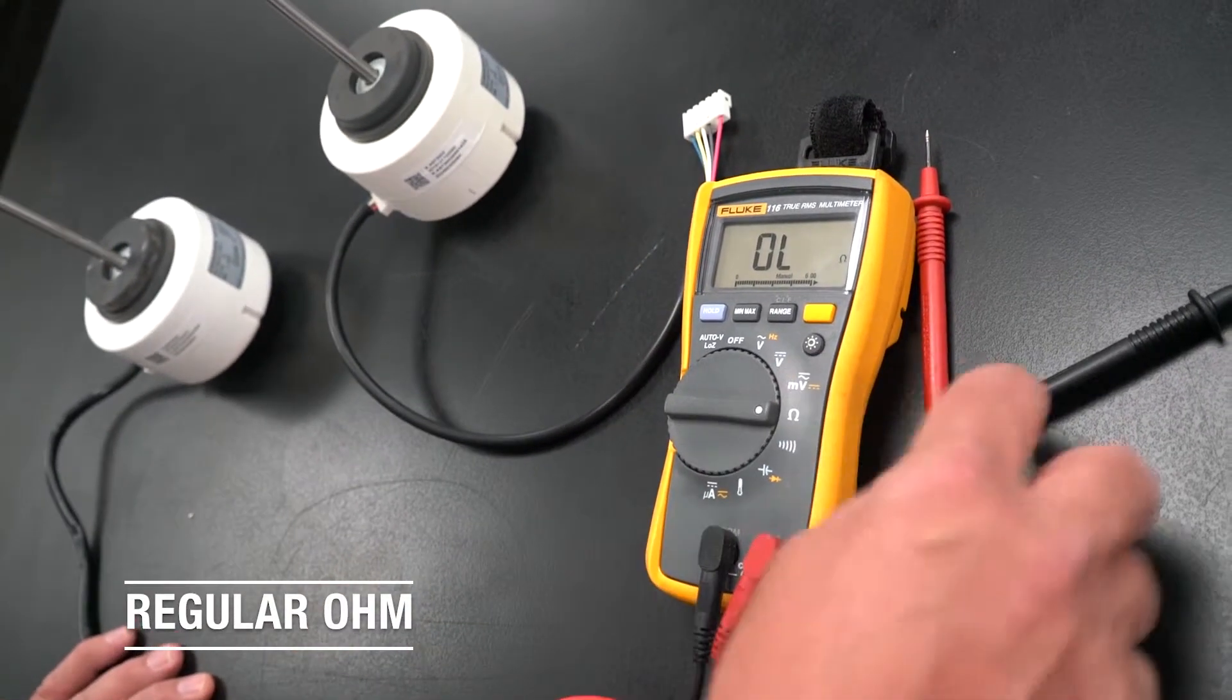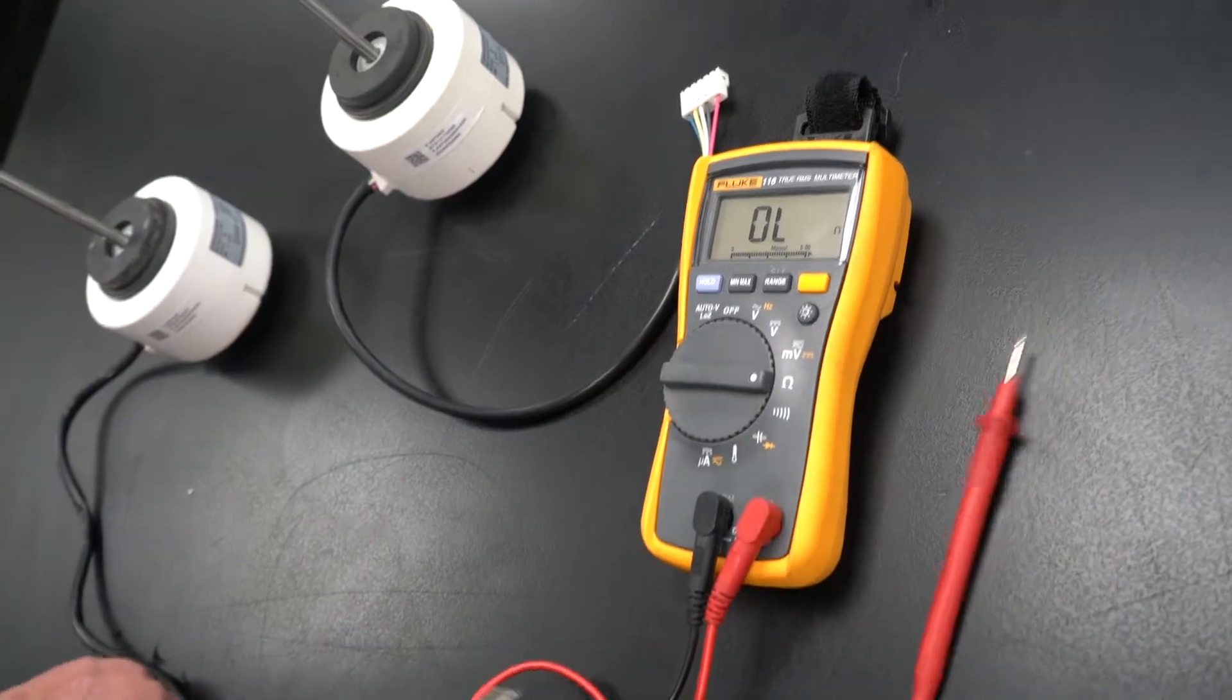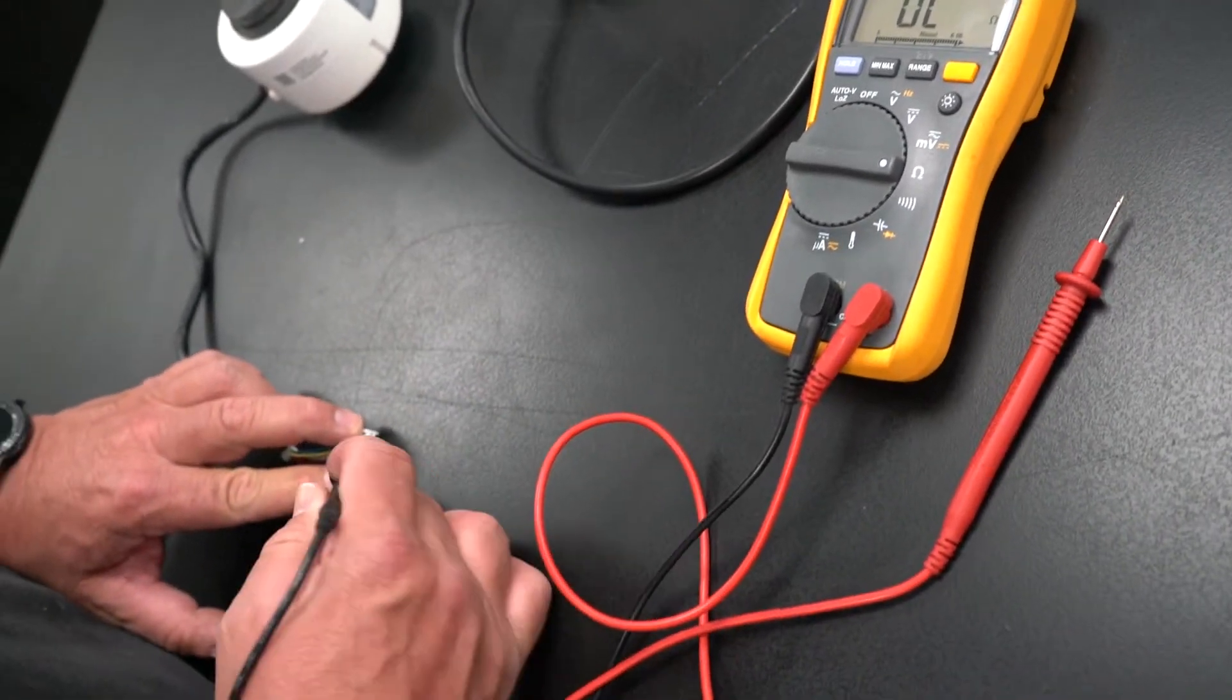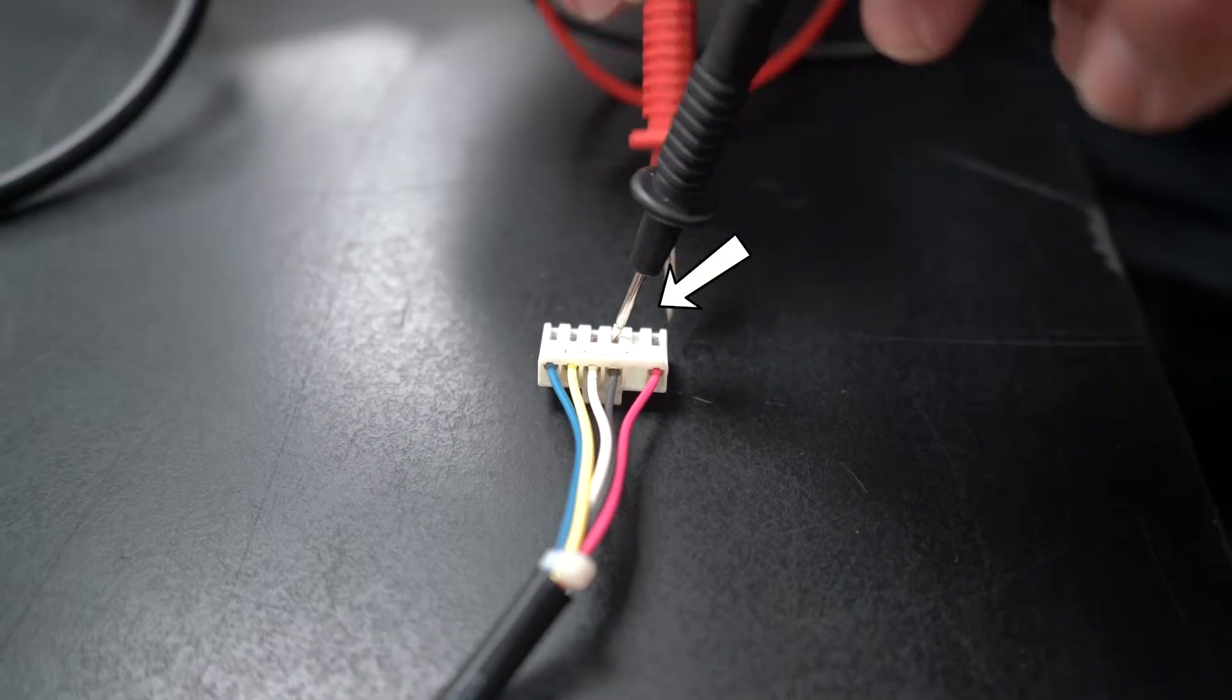You are going to put your black lead on the black wire or the number three port. You are going to check for resistance with the red wire.